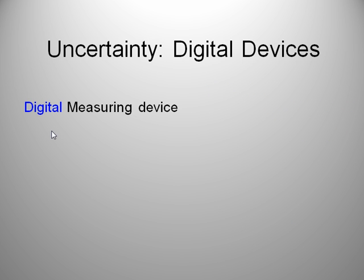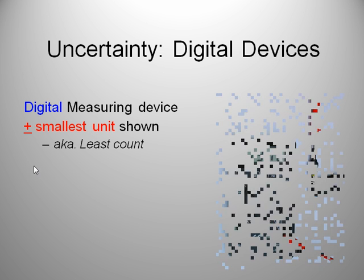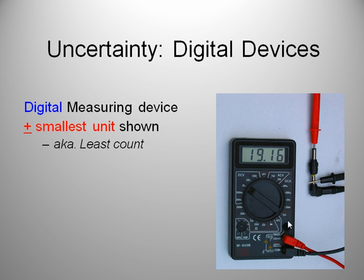Let's try digital measuring devices. These are meters that have numbers flashing at you. For these, we're going to use the smallest unit shown, also called the least count. For example, here's a digital voltmeter showing 19.16. We're going to use an uncertainty of this decimal place over here, which is 0.01. So that's our uncertainty, plus or minus 0.01.